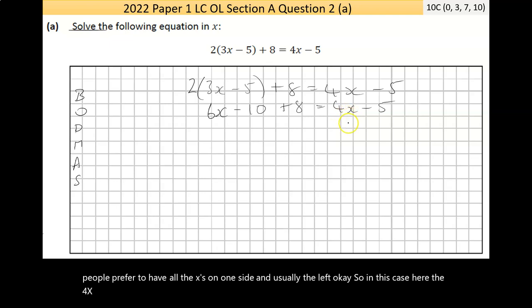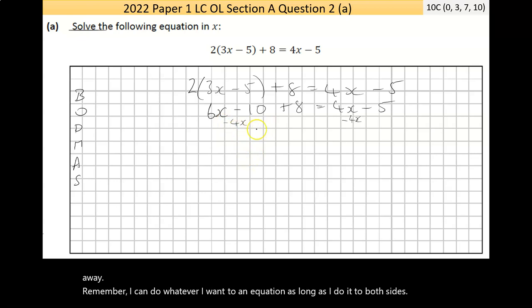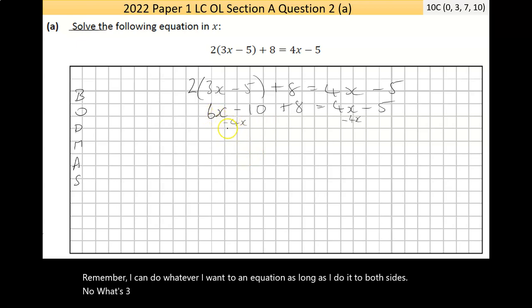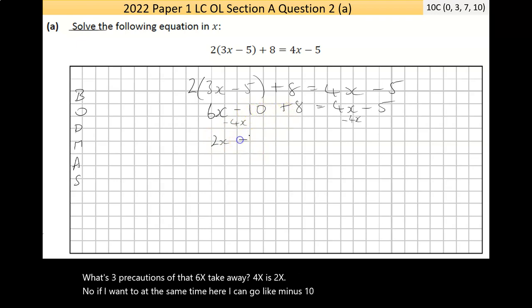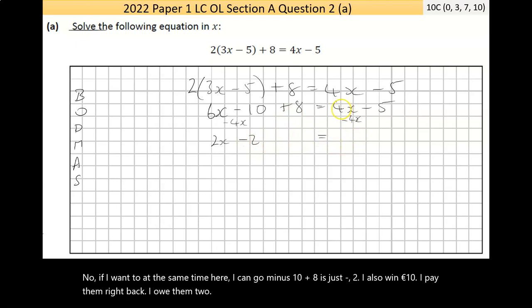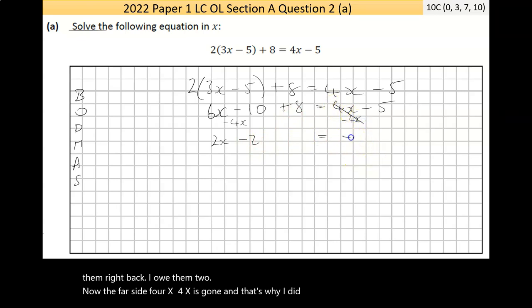So in this case here, the 4x, I'm going to get rid of that. And one simple way to get rid of something is to take it away. Remember, I can do whatever I want to in an equation, as long as I do it to both sides. What's the repercussions of that? Well, 6x take away 4x is 2x. If I want to, at the same time here, minus 10 plus 8 is just negative 2. I owe someone 10 euro. I pay them 8 back. I owe them 2. On the far side, 4x minus 4x is gone, and that's why I did this. And you're left with a negative 5.